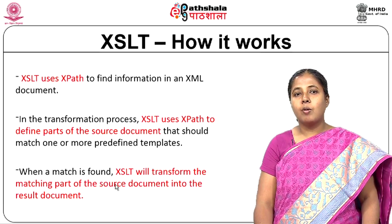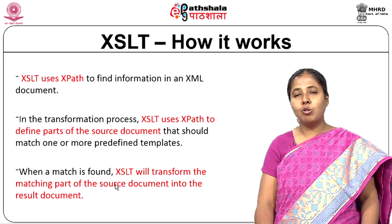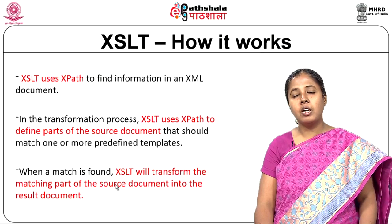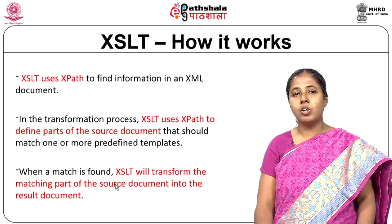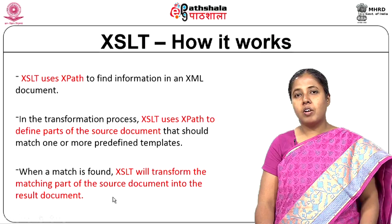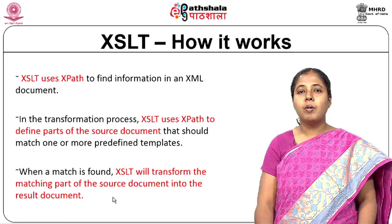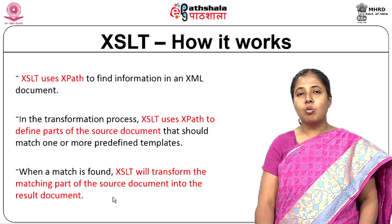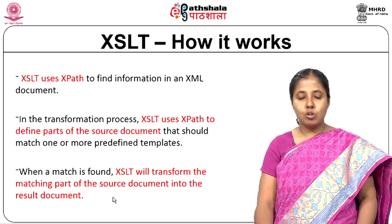How does XSLT work? XSLT basically uses a technology called XPath to find information in an XML document. You have different elements in the XML document, and to retrieve and identify the information you need to make use of XPath. XPath defines the parts of the source document or identifies the different sections of the source document that should match one or more defined templates within the XSLT. When a match is found, XSLT will transform the matching part of the source document to a resultant document.